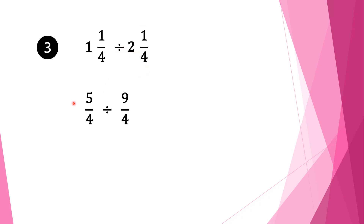Moving on to question 3. We have 1 and 1 quarter divided by 2 and 1 quarter. Again with mixed fractions, we convert into normal fractions. So 4 times 1 is 4, plus 1 is 5, and we write down our denominator 4. We bring the division sign as it is. For the second fraction: 4 times 2 is 8, plus 1 is 9, and we bring denominator 4 as it is.